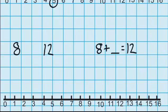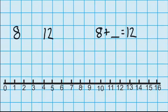So just like last time I can solve this question by finding 8 on my number line, which is the amount of flowers that were on it in the morning. And then I can count on until I get to 12.